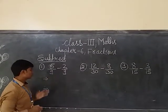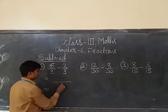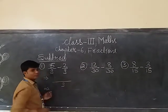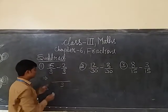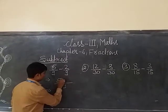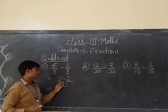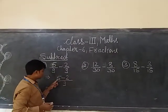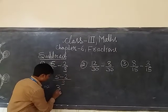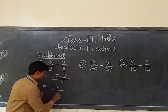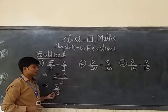Here also, what we have to do — we have to first draw the line and just below it, we have to write the denominator. And after that, we have to write the numerators and simply subtract. 5 minus 2 is 3, and write the denominator. This is your answer.